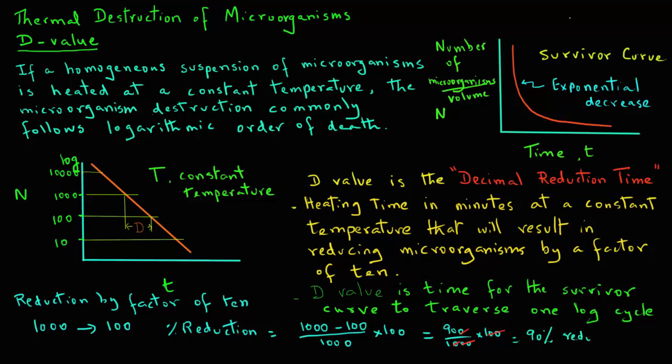There is a ninety percent reduction in the number of survivors going through one log cycle. And that reduction of ninety percent for each log cycle will remain the same along this line.